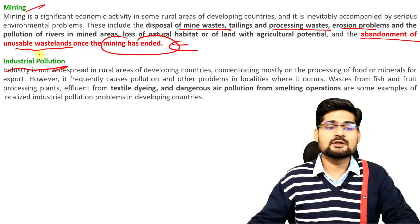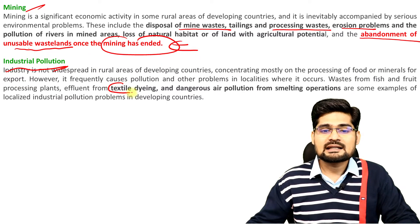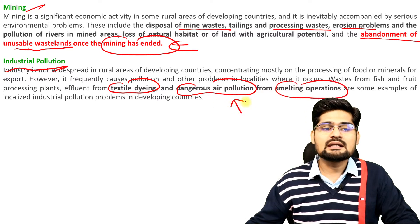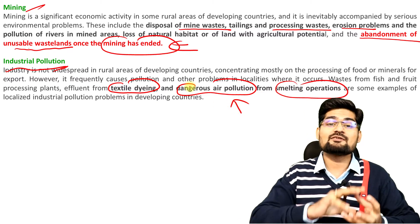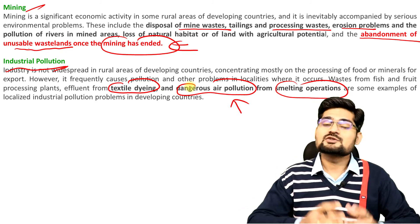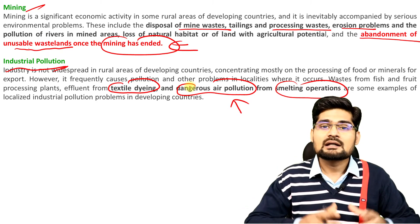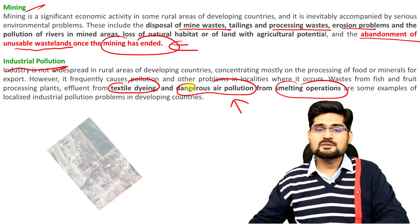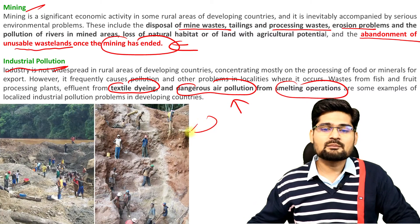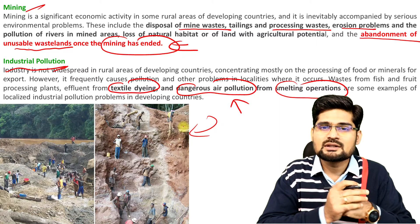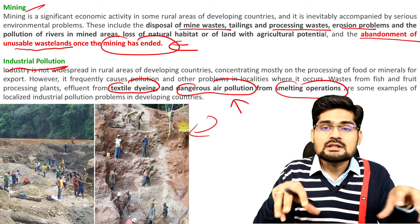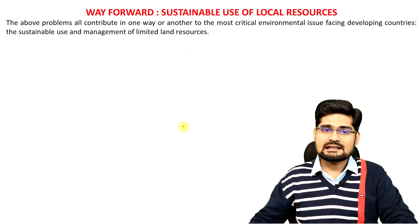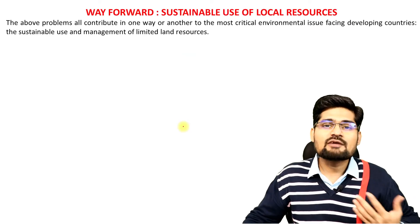Industrial pollution must also be considered — textile dyeing, dangerous air pollution and smelting operations all lead to several industrial wastes. Industrial waste flows into the water, so water pollution — Ganga river pollution is very famous in this regard. In various areas of the world, in mining areas and industrial areas of India and the world, these local challenges are the big challenges, and this management needs to be taken care of.